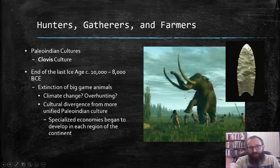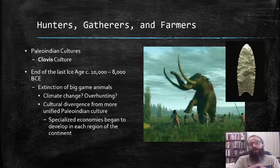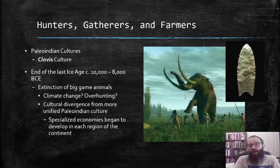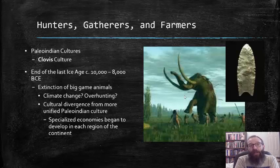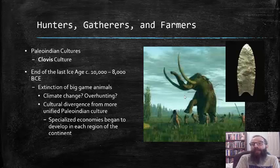At the end of the last ice age, approximately 10,000 to 8,000 BCE, there was a mass extinction event of these big game animals. There are various theories as to exactly how and why this occurred, including climate change and over-hunting. Their demise led to cultural divergence from that more unified Paleo-Indian Clovis culture, as specialized economies began to develop in each region of the continent, designed to respond to the new demands of the changing climate and the various resources available in each specific region.